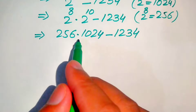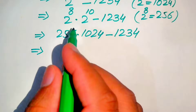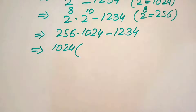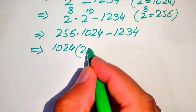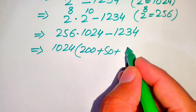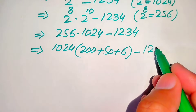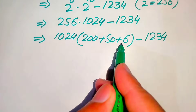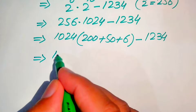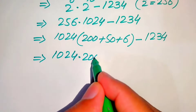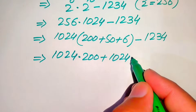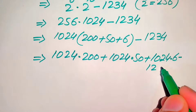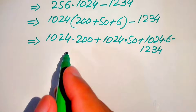We multiply 256 by 1024 first, then subtract 1234. We expand 256 as 200 plus 50 plus 6, keeping 1024 as is. Distributing, this gives: 1024 multiplied by 200, plus 1024 multiplied by 50, plus 1024 multiplied by 6, then subtract 1234.